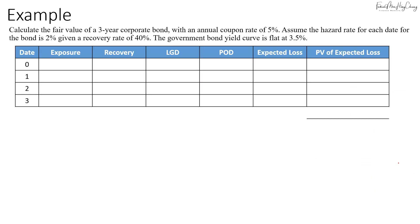Let's look at this example where we are asked to calculate the fair value of a three-year corporate bond with an annual coupon rate of 5%. Assume the hazard rate for each date of the bond is 2%, given a recovery rate of 40% and a government bond yield that is flat at 3.5%. Here we assume zero interest rate volatility.